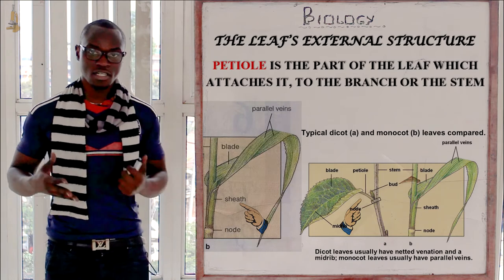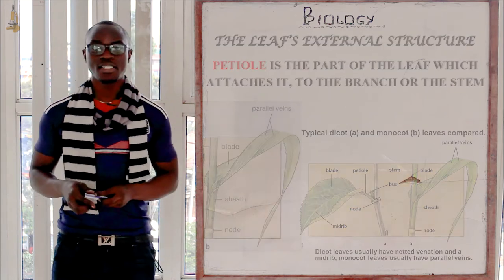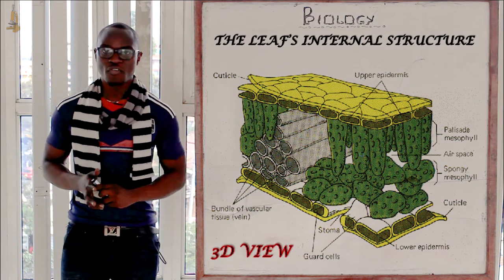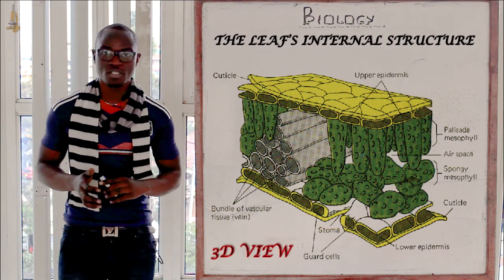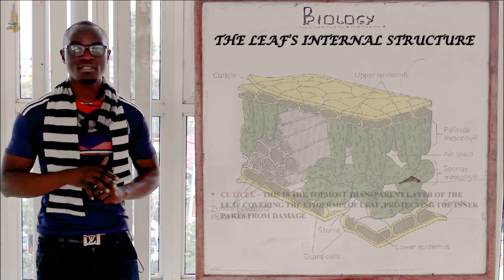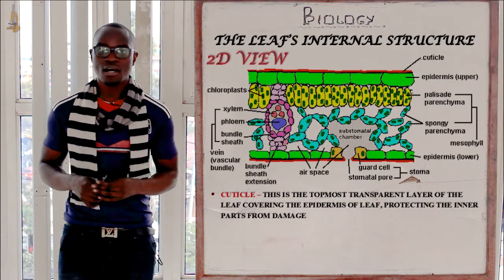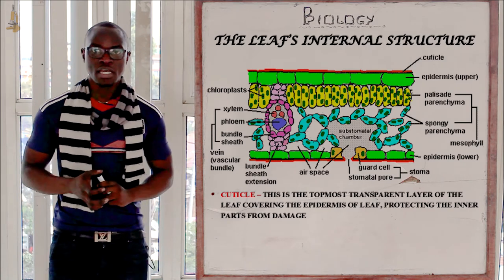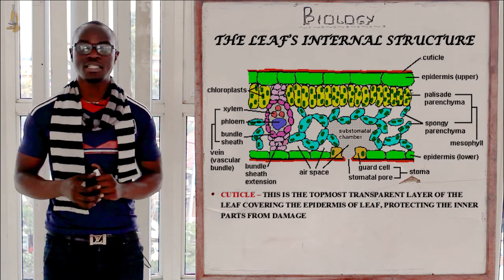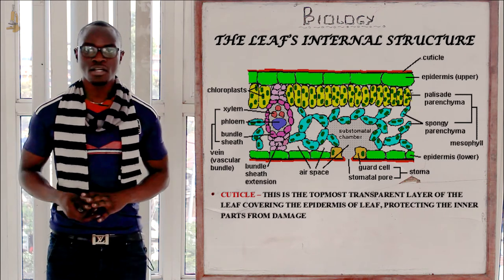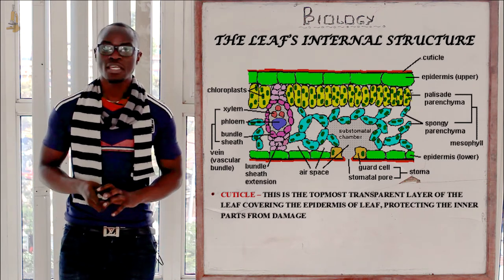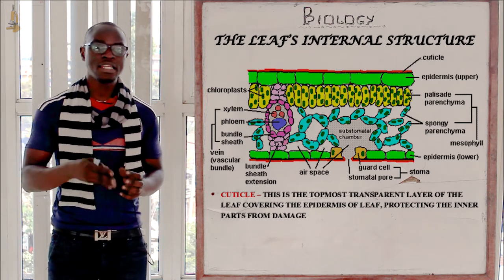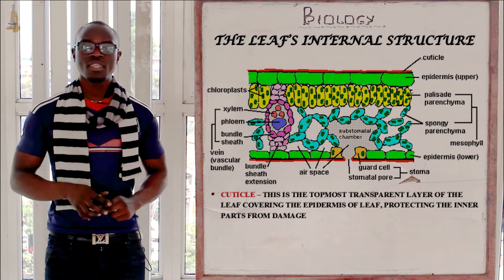That was all about the external structures of the leaf. Now let's look at the internal structures of the leaf. First, starting from the topmost part, we have the cuticle. This is the transparent layer of the leaf that mainly protects the internal parts. It allows light to penetrate to the internal structures and it is also waxy, which prevents excess water loss by the leaf to the environment.